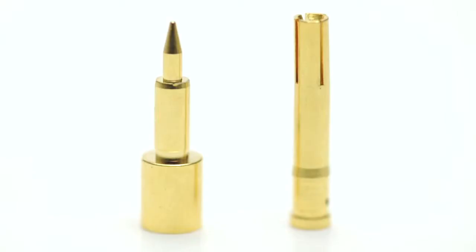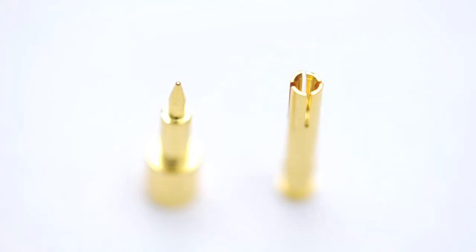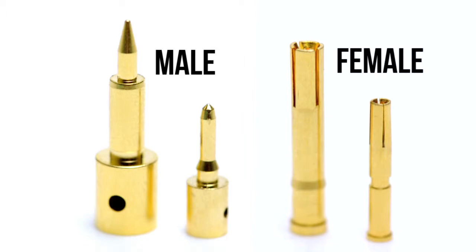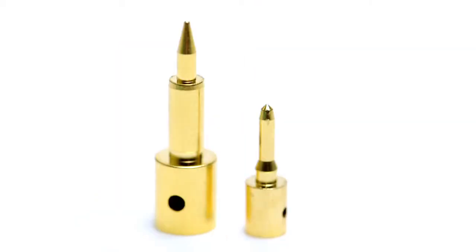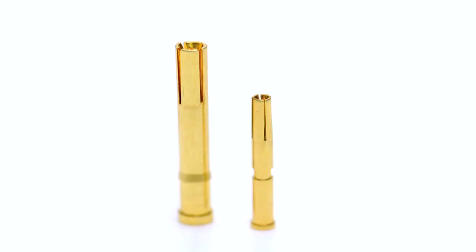The second property we need to identify is the polarity of the connector. Polarity is determined by the presence of a male pin on the connector. Most coax connectors come with a separate pin that is attached to the center conductor. A male pin is completely solid, while a female pin is hollow.